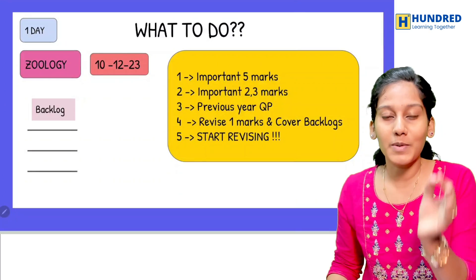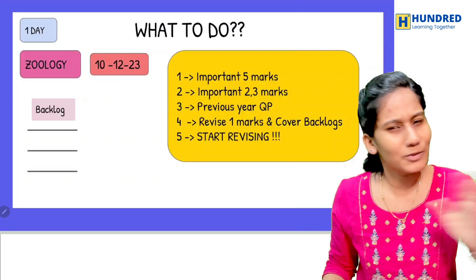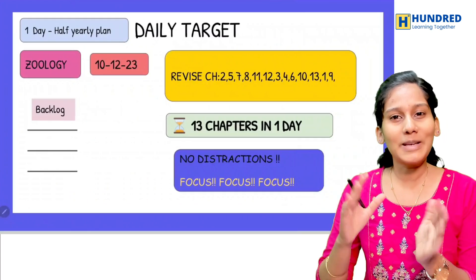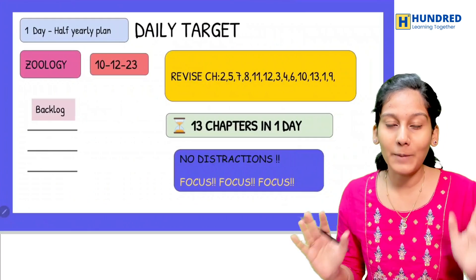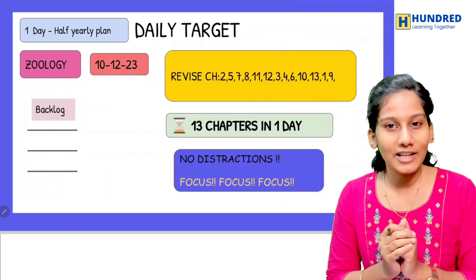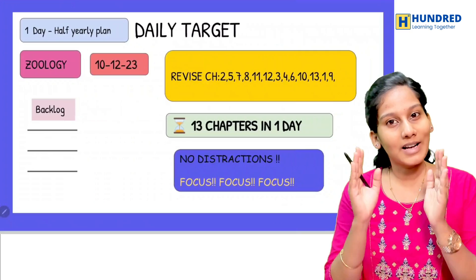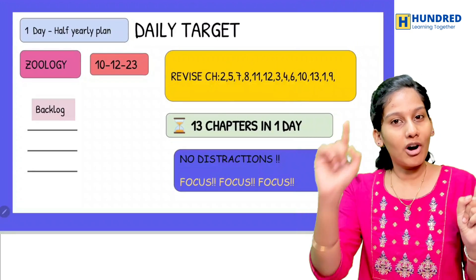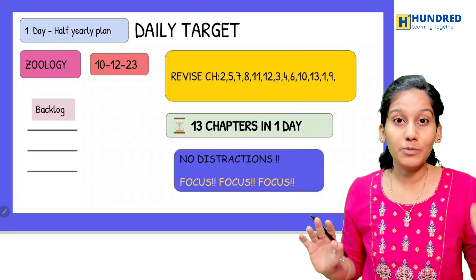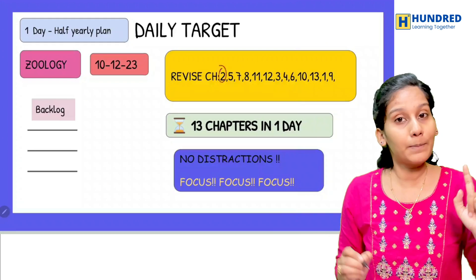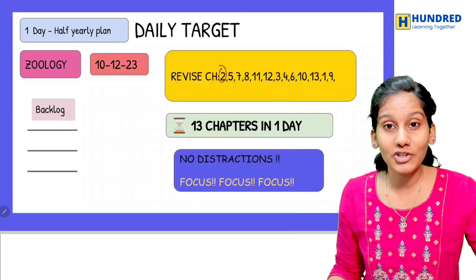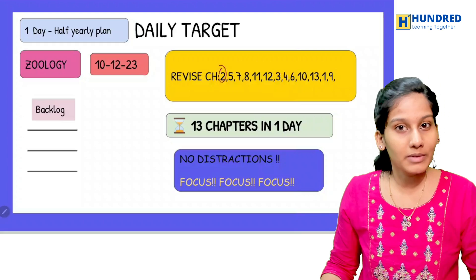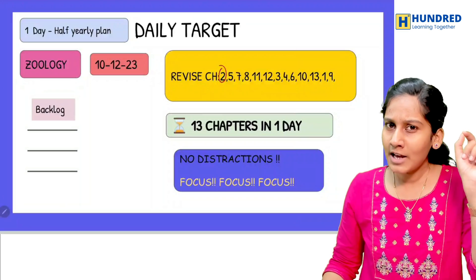There are many PDFs available for reading. We will cover 13 chapters starting from the first chapter. The first chapter is Human Reproduction, which has 5-mark and 2-mark questions, and you can enter those in the paper.